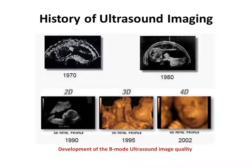This slide shows different ultrasound images taken over several years, demonstrating the development and improvement of image quality. The images from 1970 and 1980 were not clear and the quality was not good. However, the images from 1995 and 2002 are clear and excellent in quality. Especially for the 2002 image, you can see the face of the fetus clearly.